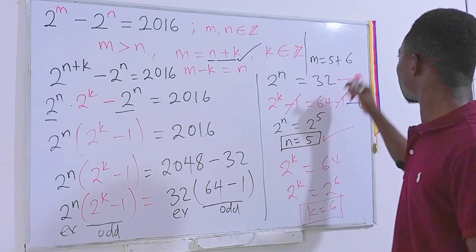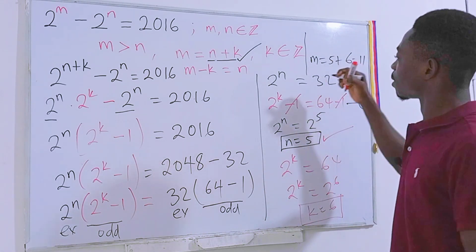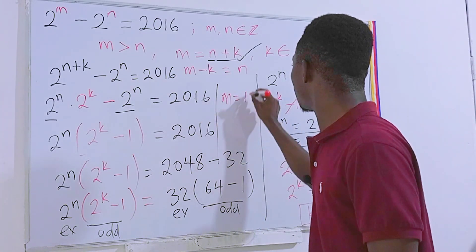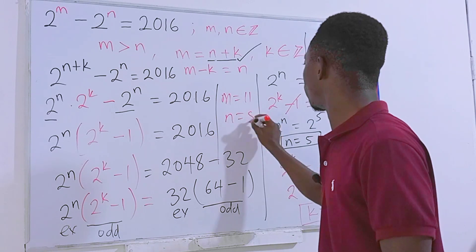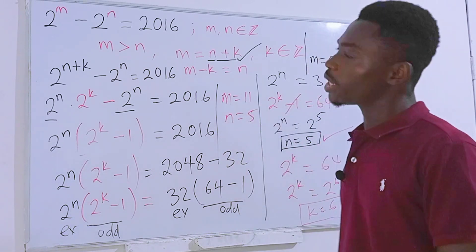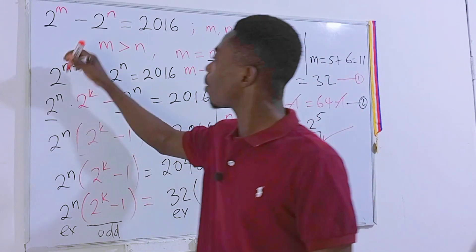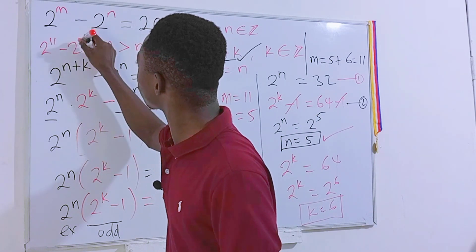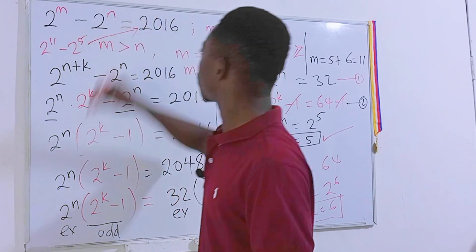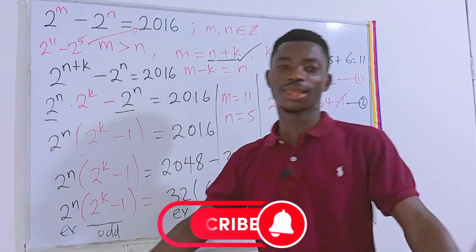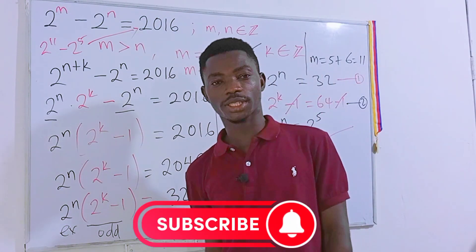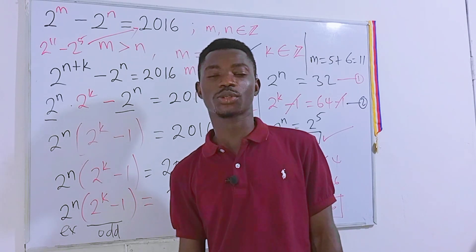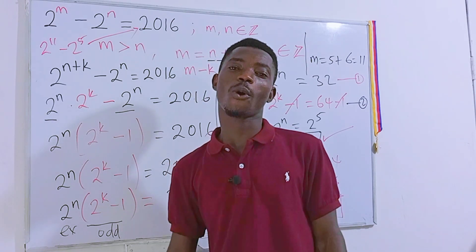Now we find m. We know m equals n plus k, with n equal to 5 and k equal to 6, so m equals 5 plus 6, which is 11. Therefore m equals 11 and n equals 5. We can verify: 2 to the power 11 minus 2 to the power 5 equals 2016. Very simple — the question is interesting but straightforward.